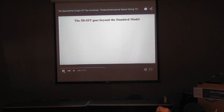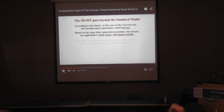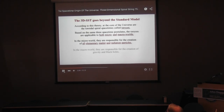The 3DSST goes beyond the standard model. According to this theory, at the core of the universe are toroidal spiral spacetimes called Tauruses. Based on the same three spacetime coordinates, the Tauruses are applicable to both micro and macro worlds. In the micro world, they are responsible for the creation of all elementary matter and radiation particles. In the macro world, they are responsible for the creation of gravity and grand forms.